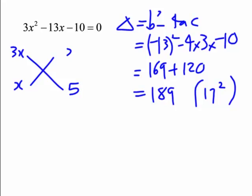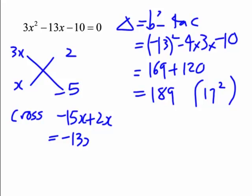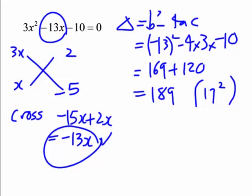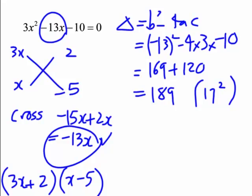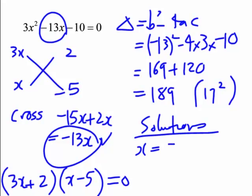169 plus 120 equals 289, which is 17 squared — a perfect square — so we can factor it. Using the cross method: 3x and x on one side, and factors of minus 10 on the other. We try 5 and 2; putting minus on the 5 gives the cross as 3x times minus 5 equals minus 15x, plus 2x, which equals minus 13x. So the factored form is (3x + 2)(x − 5) = 0. The solutions are x equals 5 and, from 3x + 2 = 0, x equals minus 2 over 3.